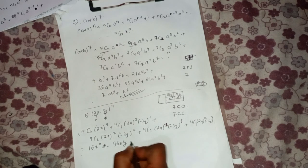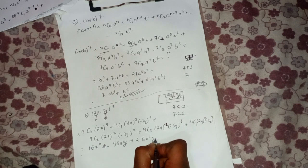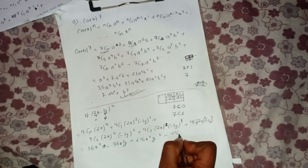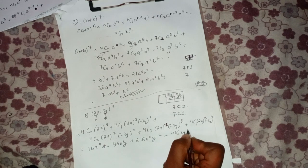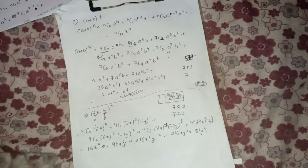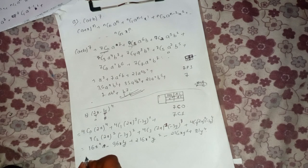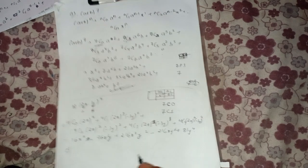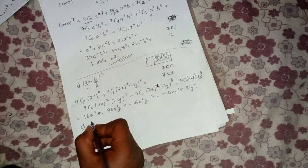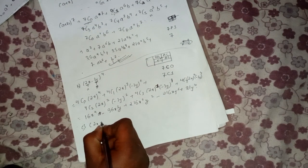The expansion of (2x - 3y)^4 gives: 16x^4 - 96x^3·y + 216x^2·y^2 - 216x·y^3 + 81y^4. In the next video, I will show you the concept more clearly.